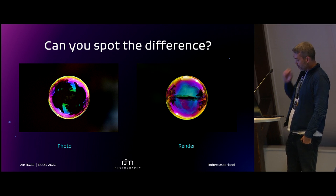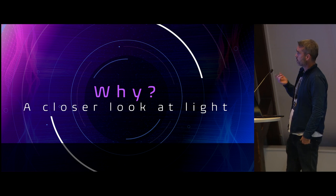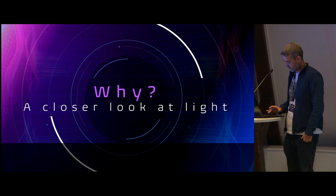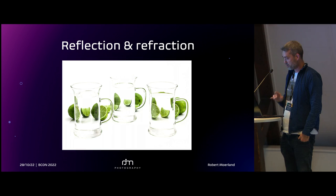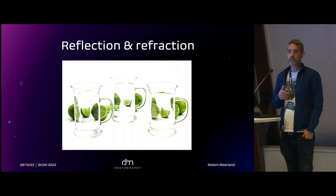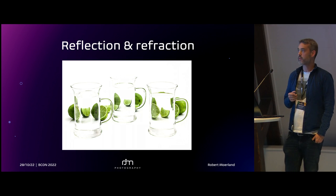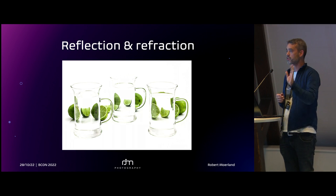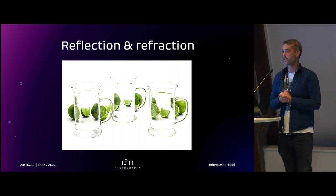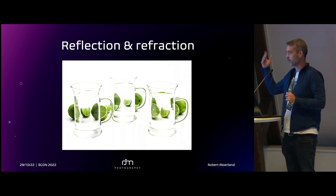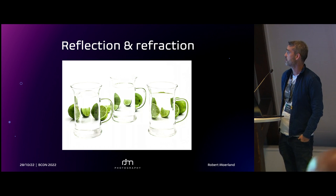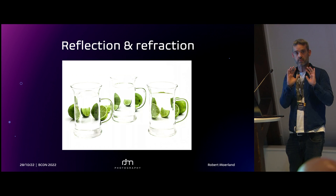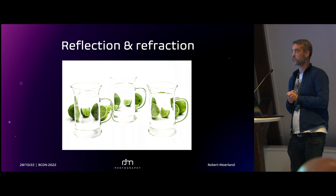So why is this happening? Let's have a closer look at light. As Blender users we know the essentials: we know reflection and refraction. Reflection is where a light ray bounces off a surface and I can see it on my camera sensor or in this case the computer. Refraction is the bending of light caused by transparent objects.